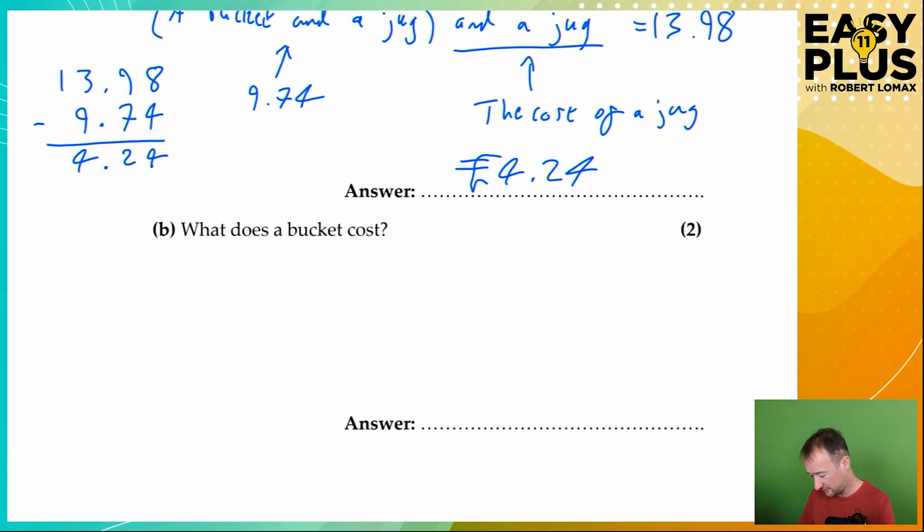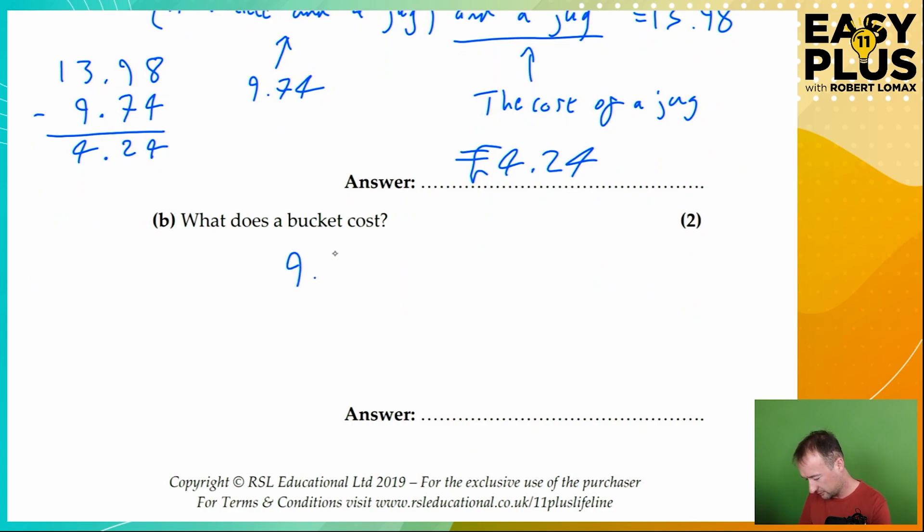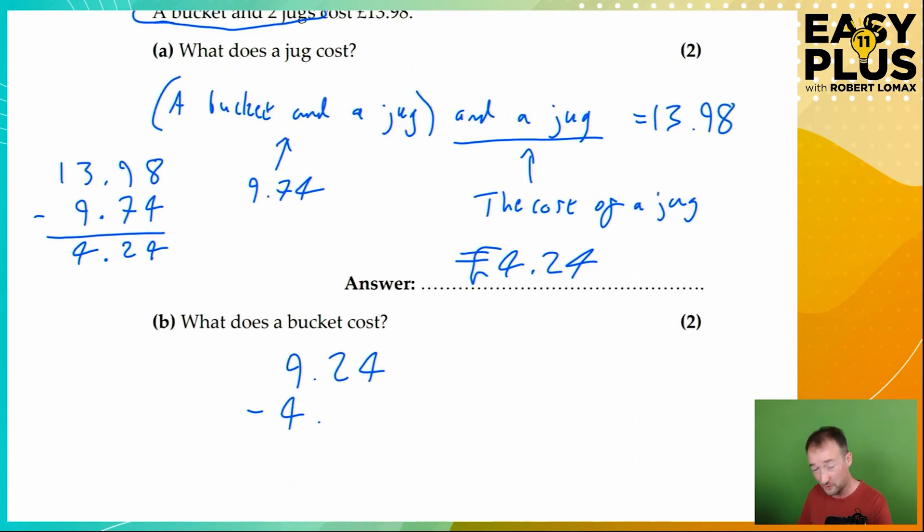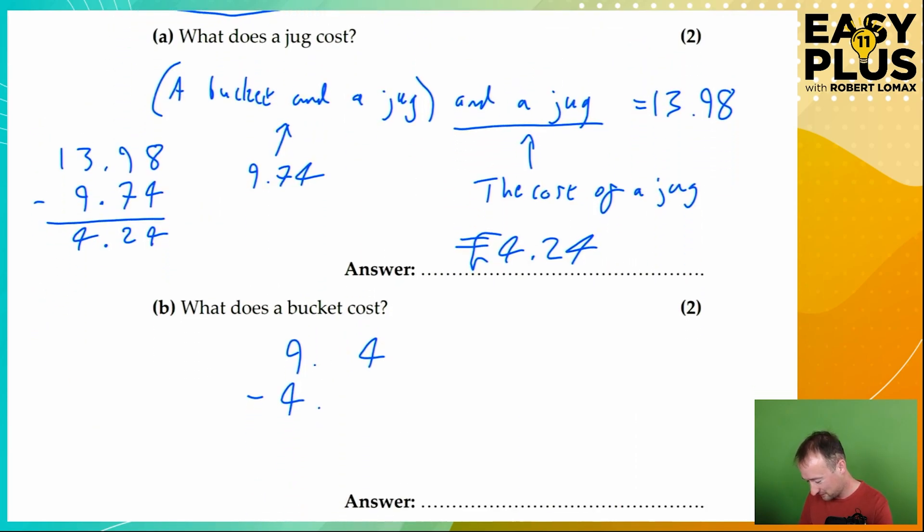And we'll do that nice and simply. £9.74 minus £4.24. Take them away. And that gives us the answer of £5.50.